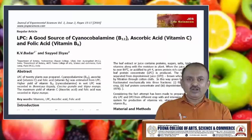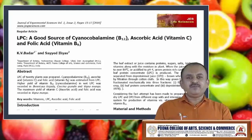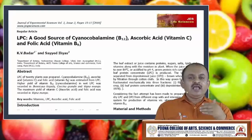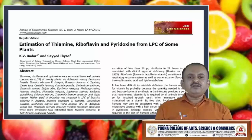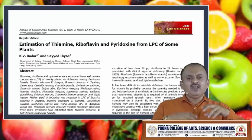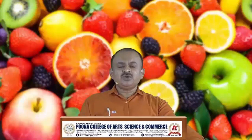In our research center and laboratory, we have worked on the isolation of vitamins from plant origin. This research paper is published in an international research journal, the Journal of Experimental Sciences. We isolated different vitamins — cyanocobalamin, ascorbic acid and folic acid — from various vegetables. A second paper was also published, with findings on thiamine, riboflavin, pyridoxine and LPC (leaf protein concentrate, which contains a large amount of vitamins) from different plant origins. This is a very good finding from our research laboratory.